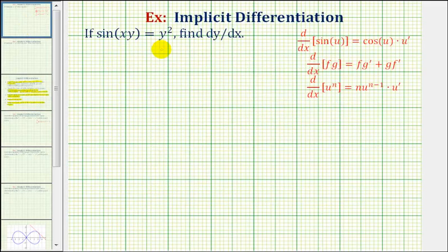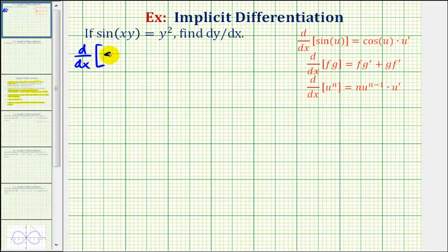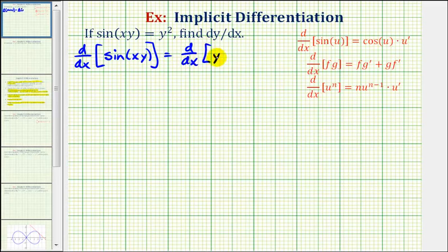So going back to our equation, to find dy/dx, we'll first differentiate both sides with respect to x. So we'll have the derivative of sine xy with respect to x on the left, and on the right we'll have the derivative of y squared with respect to x.